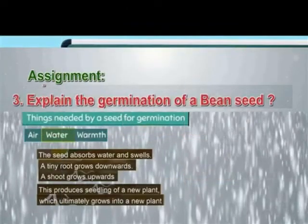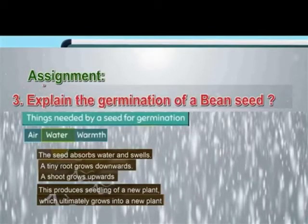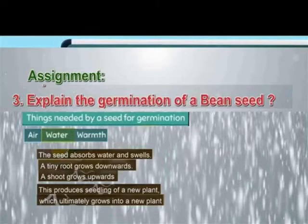Explain the germination of the bean seed. Conditions needed by the seed for germination: air, water, and warmth. The seed absorbs water and swells. The tiny root grows downward. The shoot grows upward. This produces a seedling of the new plant, which ultimately grows into a new plant.